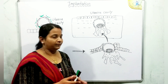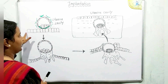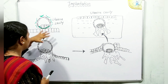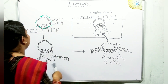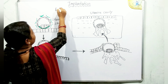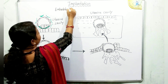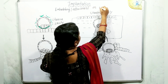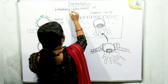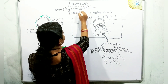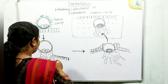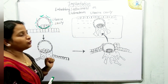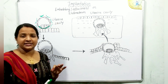Implantation is the embedding or attachment of the blastocyst on the endometrium. Here you can see the zona pellucida is disintegrating due to the action of proteolytic enzymes secreted by the trophoblastic cells.